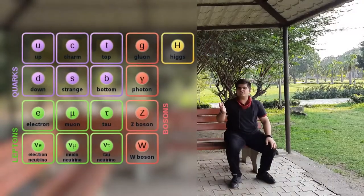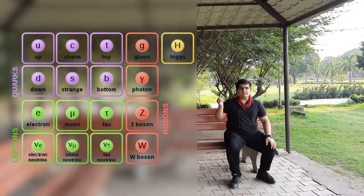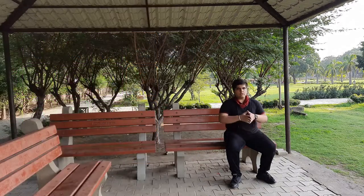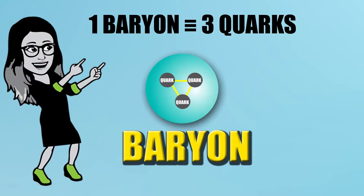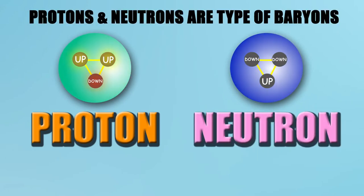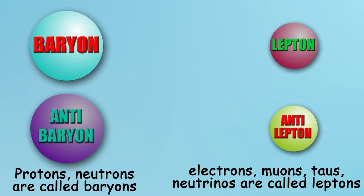This is the standard model. These are the quarks, the leptons, the force carrier bosons, and the Higgs boson. A baryon is a particle made up of three quarks. For example, a proton is made up of three quarks. Similarly, a neutron. All these particles have their own set of anti-particles.